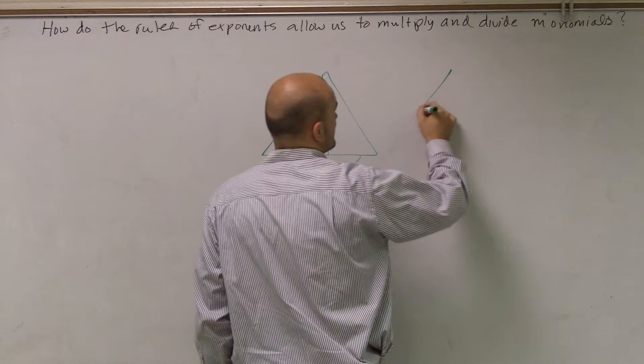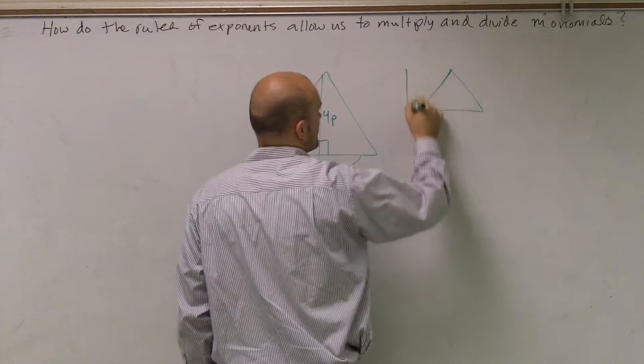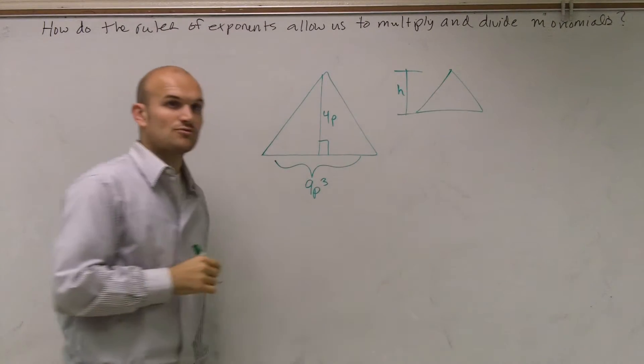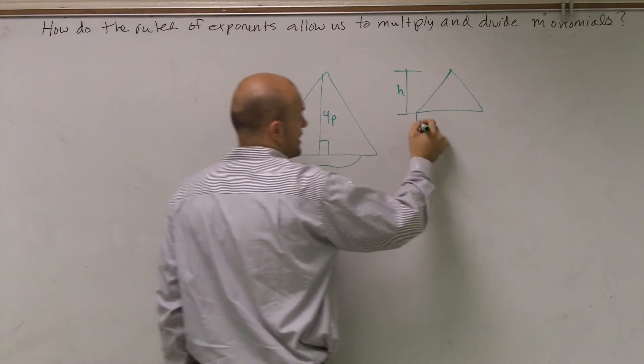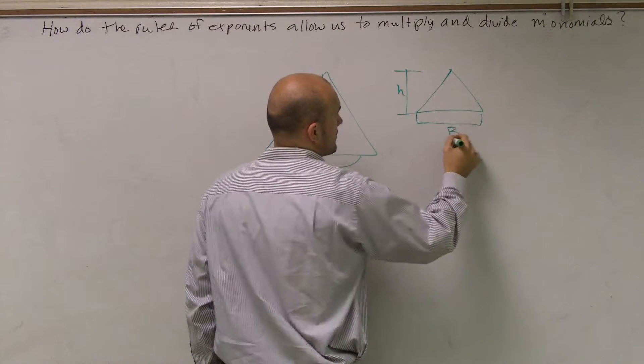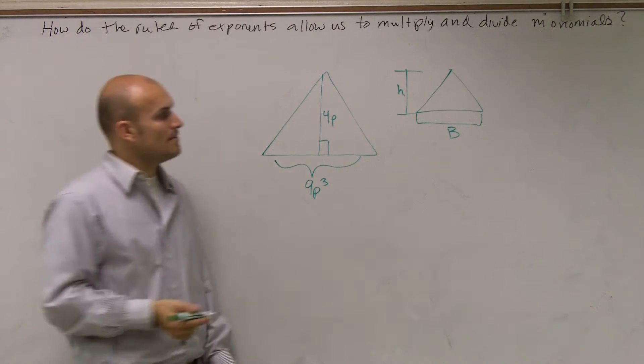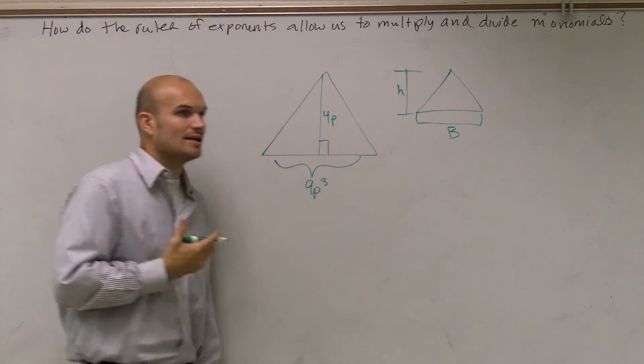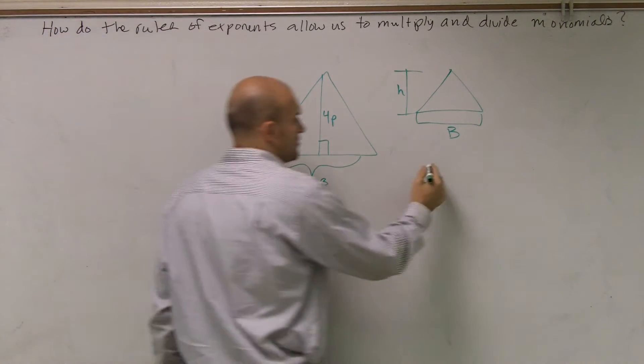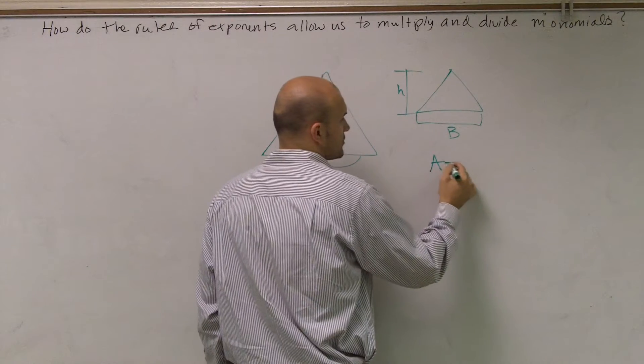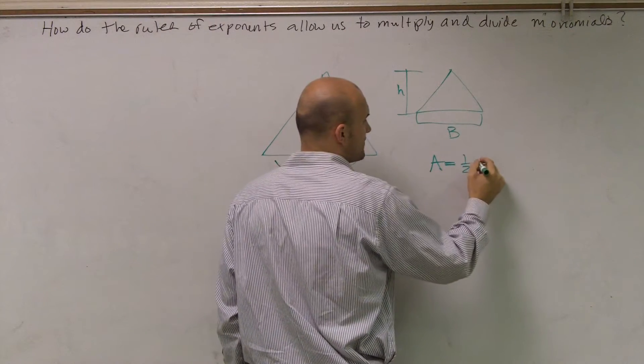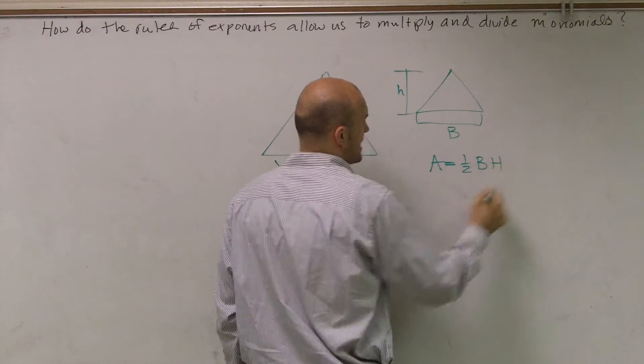And if we just take a general triangle, you're going to have H, which will represent your height, and then also you're going to have the distance at the bottom, which will be your base. So remember, when calculating the area of a triangle, the relationship is one-half base times height.